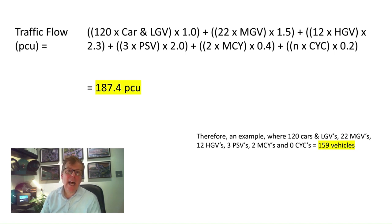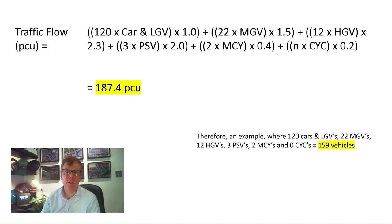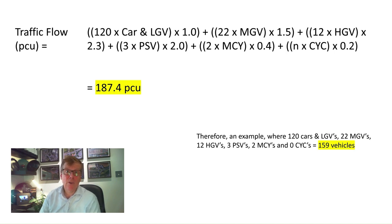We then add the results from the other three 15-minute segments in the hour to get results in PCUs per hour. However, it may not always be possible to obtain survey data — for example, if the work relates to a new road — in which case forecast flows will need to be used instead.